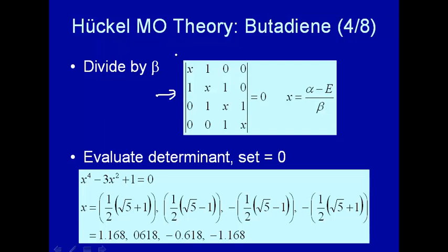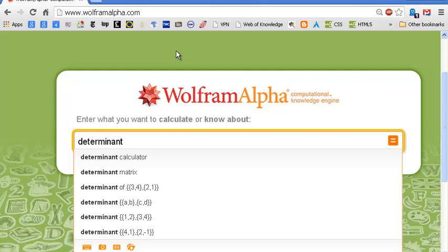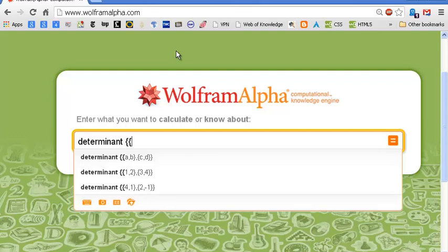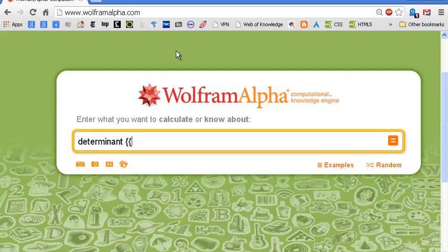Now what we want to do is solve this determinant and essentially solve for X. We could use high school or college methods for evaluating determinants, but we have Wolfram Alpha waiting in the wings. So we're going to ask Wolfram Alpha to determine this determinant. We type 'determinant' — we can abbreviate that 'det' — and now we have to put in that matrix, entering it row by row.